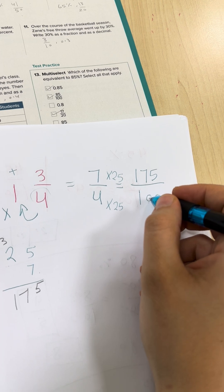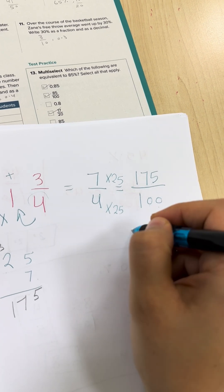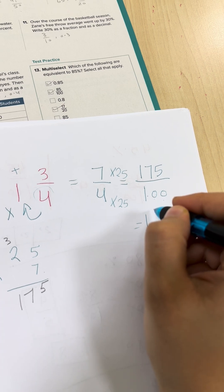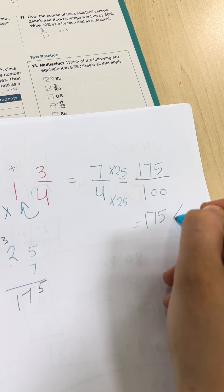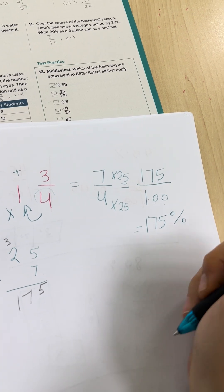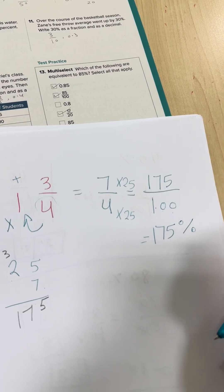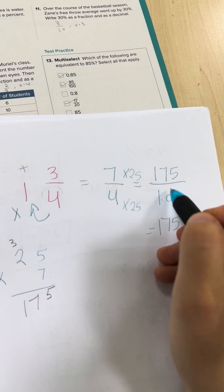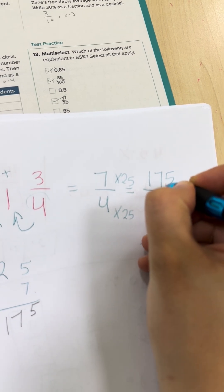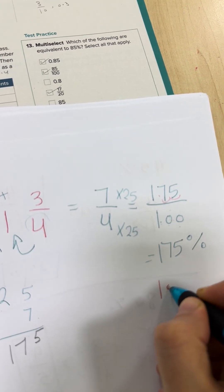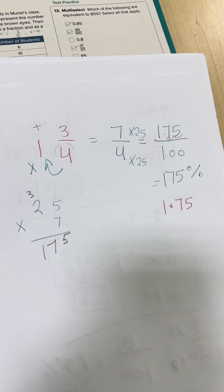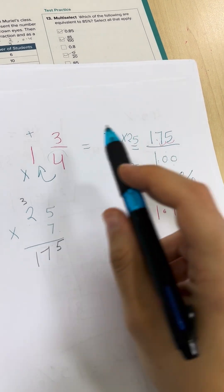Since the denominator is 100, we write only 175 percent. For the decimal, since the denominator is 100, move to the left two steps: one, two — so 1.75. This is the decimal. So we have percent 175%, fraction 7/4, and decimal 1.75.